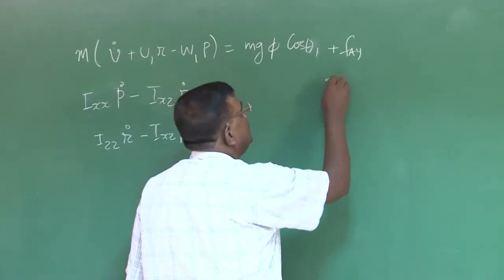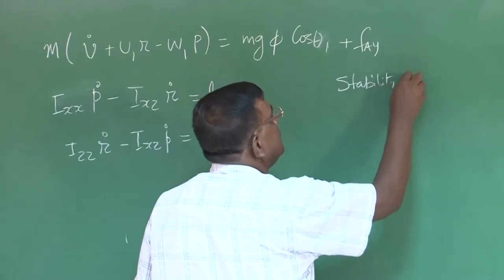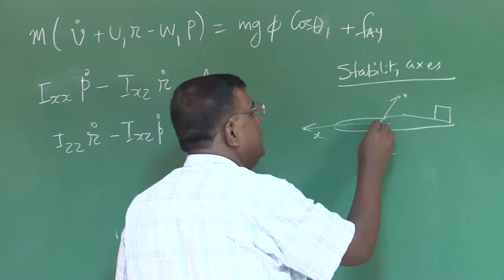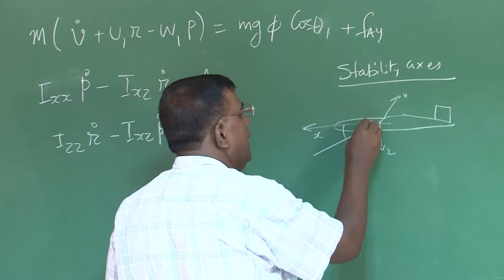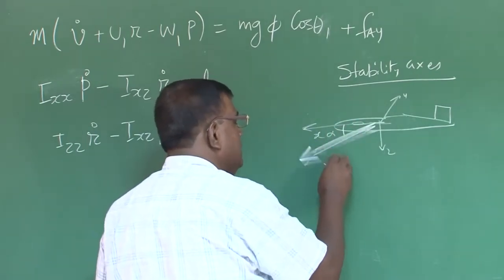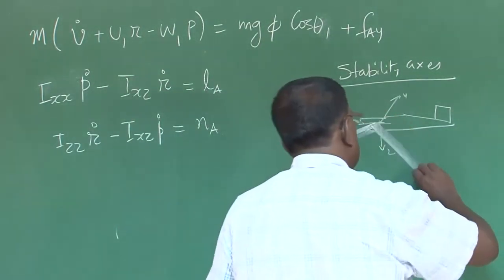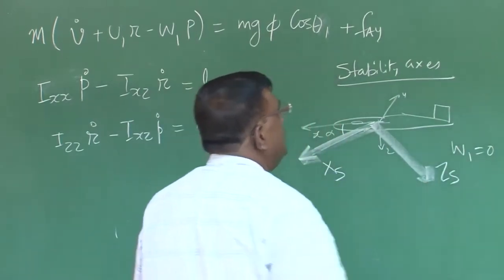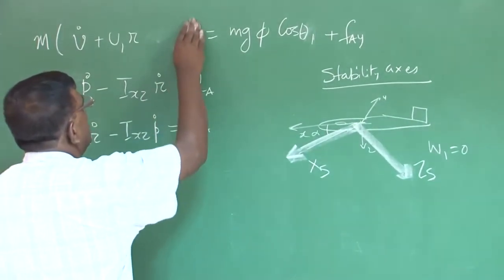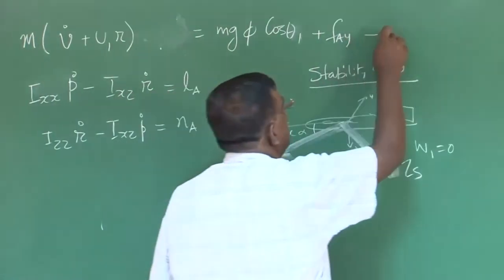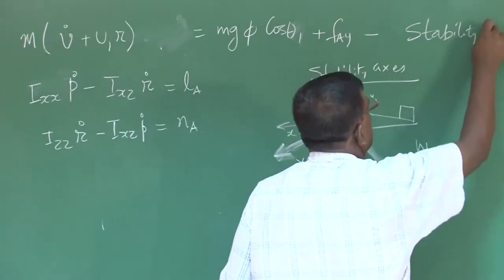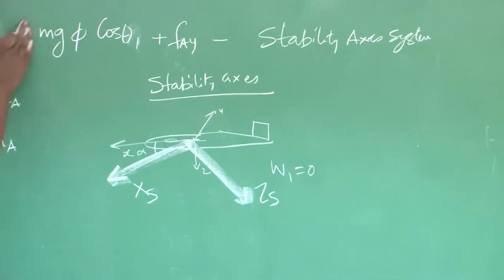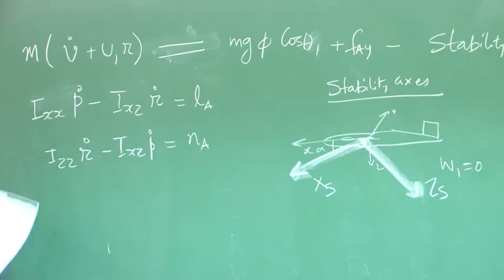If we also use the stability axis system — where the x-axis is aligned with the velocity vector in the vertical plane — then w₁ = 0, and the equation simplifies further by removing the w₁p term. We must be careful: once we use the stability axis system, the moments of inertia I_xx, I_zz, and I_xz must also be expressed in the stability axis system.